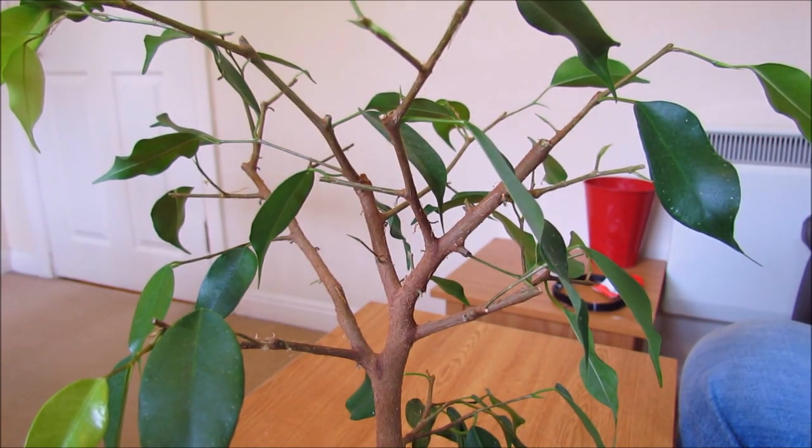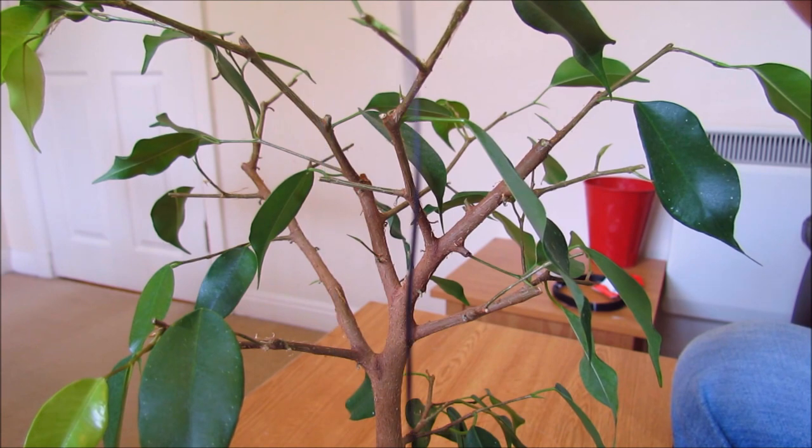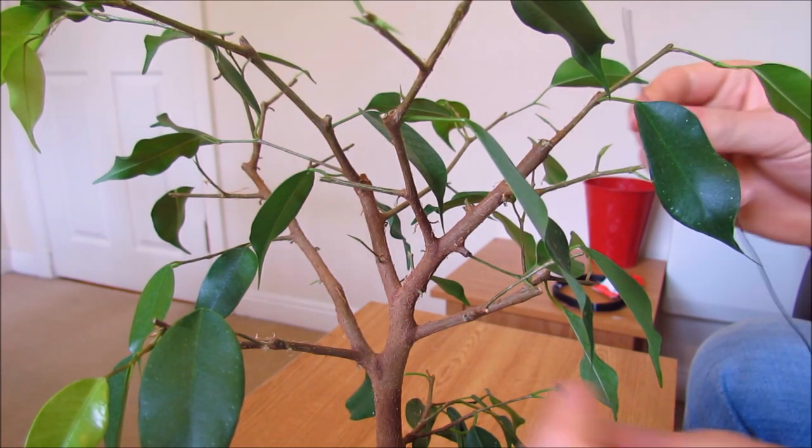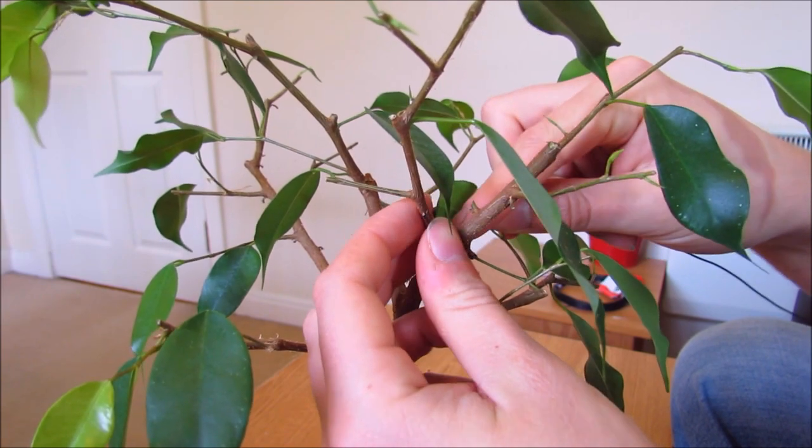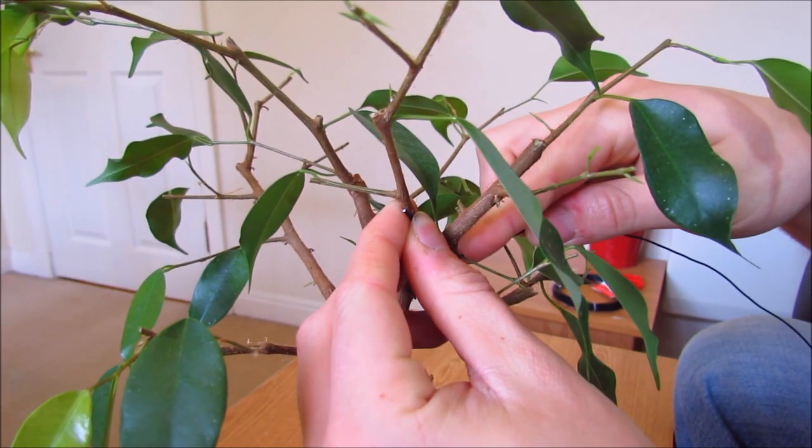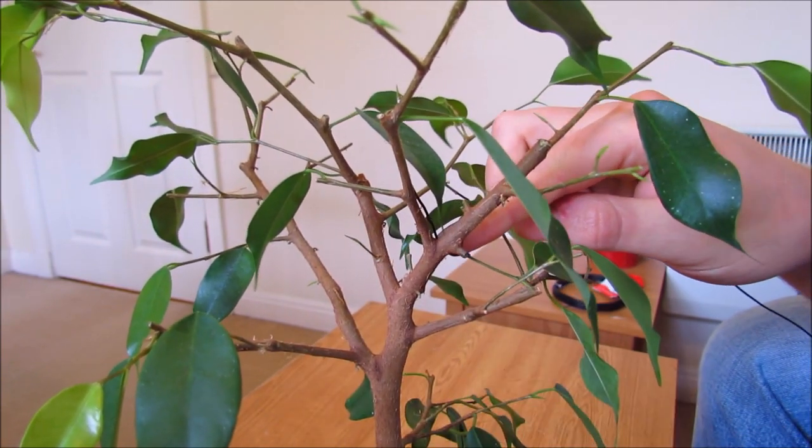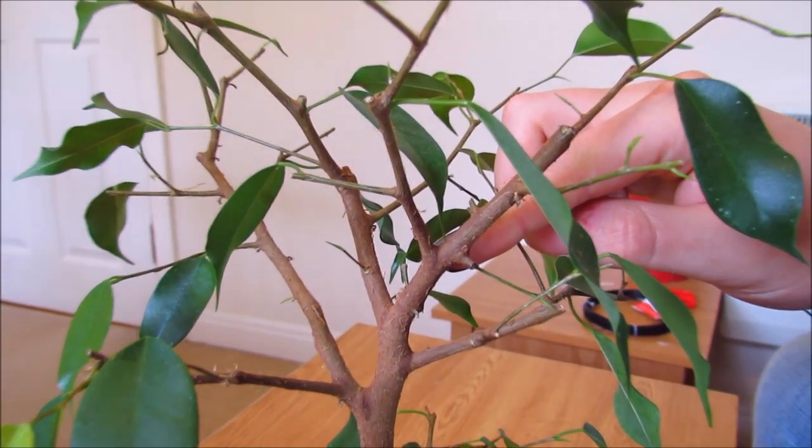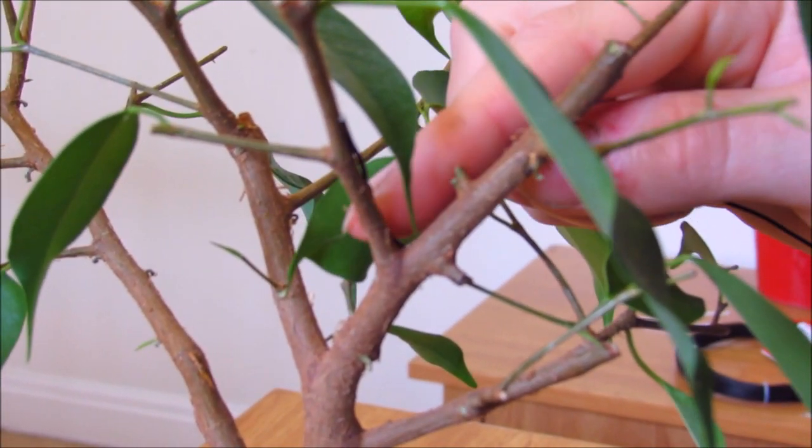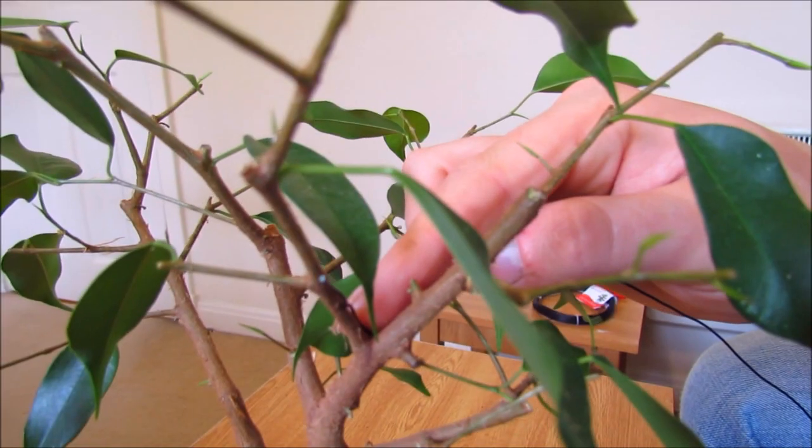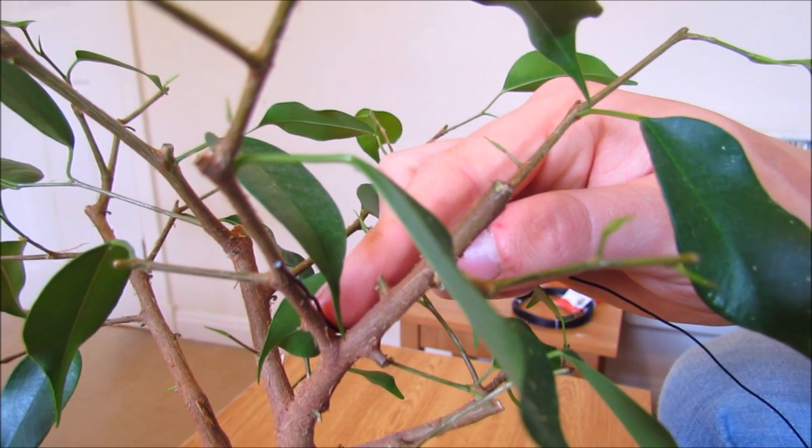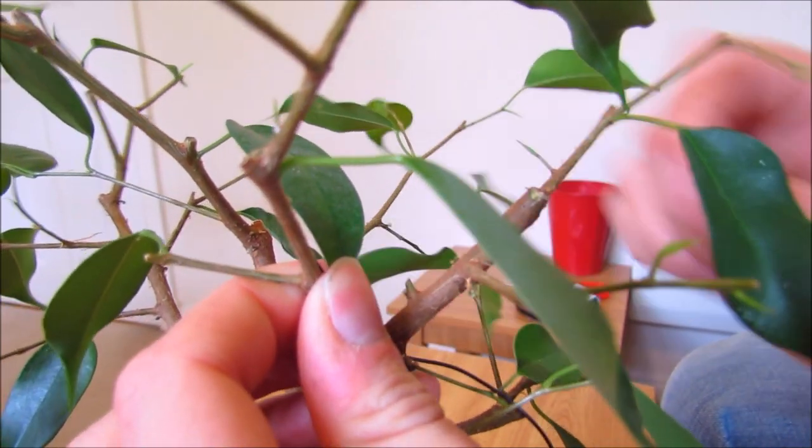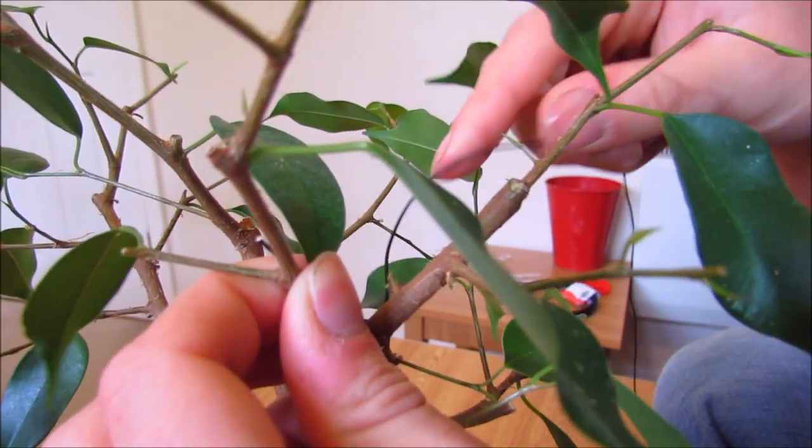So first of all I've got my wire. It's one millimeter aluminum and I'll start off by just putting it along the branch. Then what I'll do is I'll wrap it around the main trunk to get a good anchor point. So I'll now wrap it around the main trunk here.